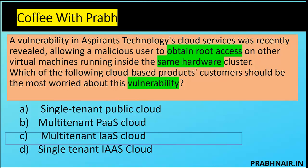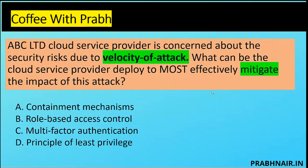Next coffee shot: ABC Limited cloud service provider is concerned about the security risk due to velocity of attack — meaning amplification and spread of an attack. For example, if a system is infected with a virus it spreads across other systems — that's amplification. The attack is in progress and spreads to more and more systems. What can the cloud service provider deploy most effectively to mitigate the impact? Option A is a containment mechanism — which can take the form of defense in depth and similar controls.